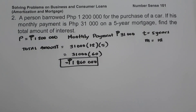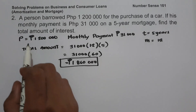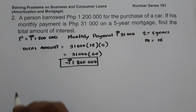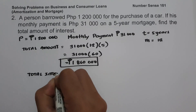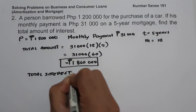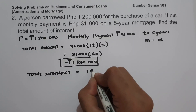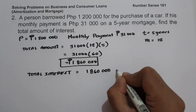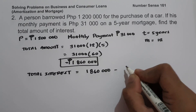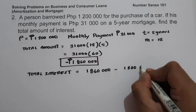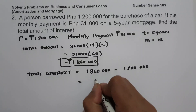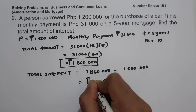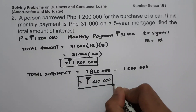To find the total amount of interest, we subtract the principal from the total amount paid: total interest = 1,860,000 − 1,200,000 = 660,000 pesos. This is the total amount of interest.